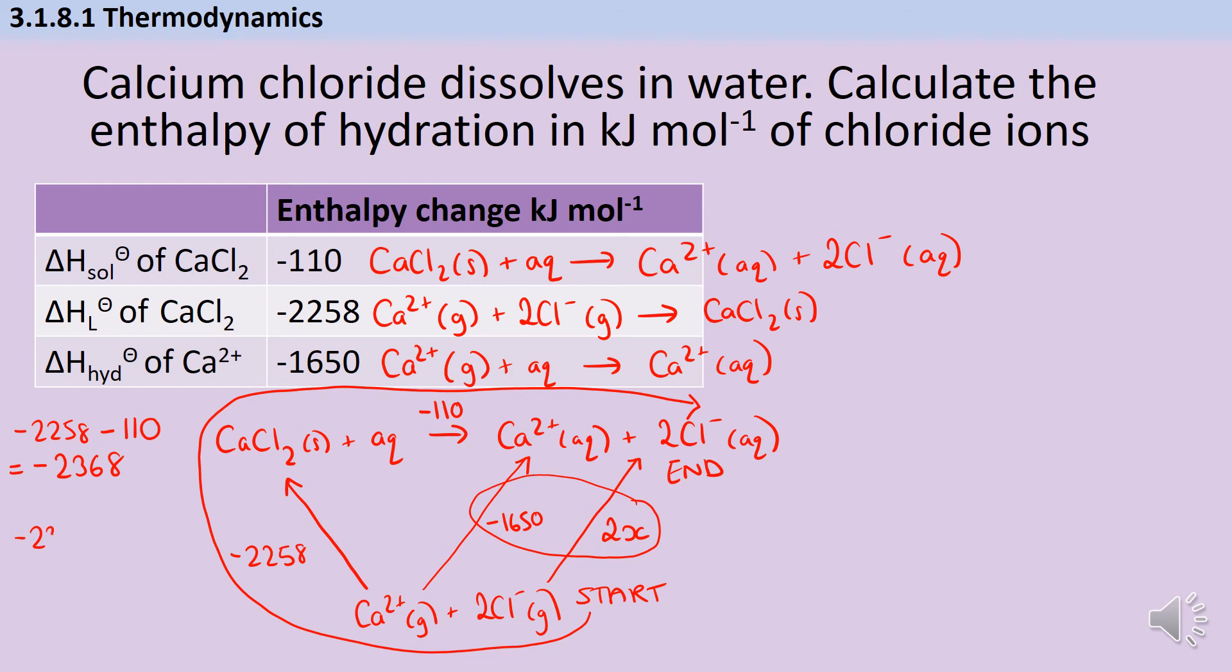So -2368 equals -1650 plus 2x. Now I'm going to add 1650 to both sides of my equation in order to get rid of it from the right. And I'm left with -718 is 2x. So therefore, to get x, obviously I'm just going to divide by 2, and I end up with -359 kilojoules per mole.